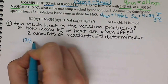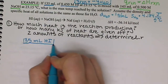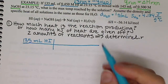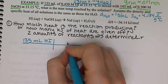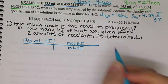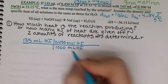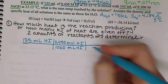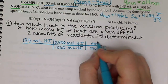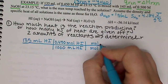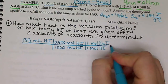We start with our 135 milliliters of HI solution. I want to go from milliliters to moles of HI. I'll do that using the molarity: 0.450 moles per 1,000 milliliters. Then I use stoichiometry to go from moles of HI to moles of NaI — and it just so happens to be a 1-to-1 ratio.